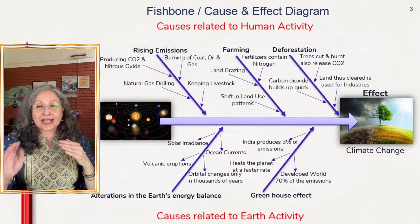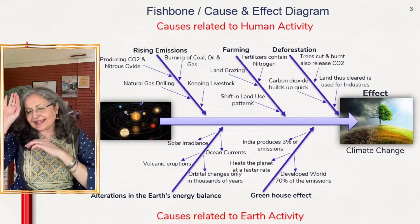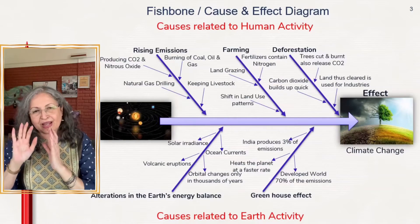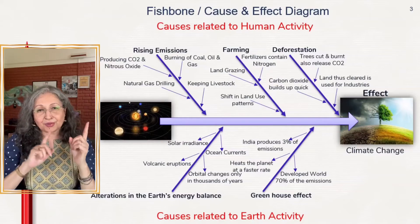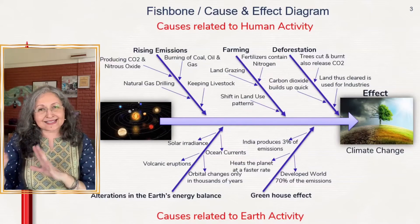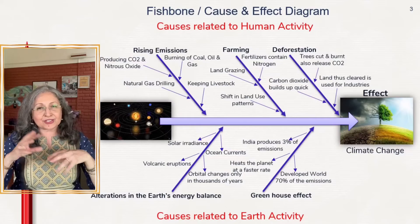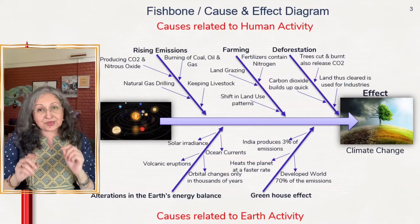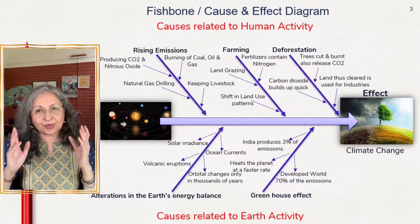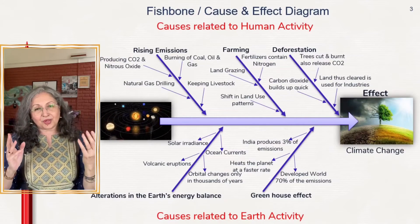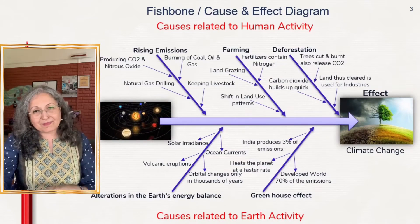So as you can see, along the bones of the fish you have all the causes, and at the head of the fish you have the effect. This is the fish bone diagram — the cause and effect diagram. Do not make the mistake of using this graphic organizer for anything other than analyzing what causes lead to a particular effect.